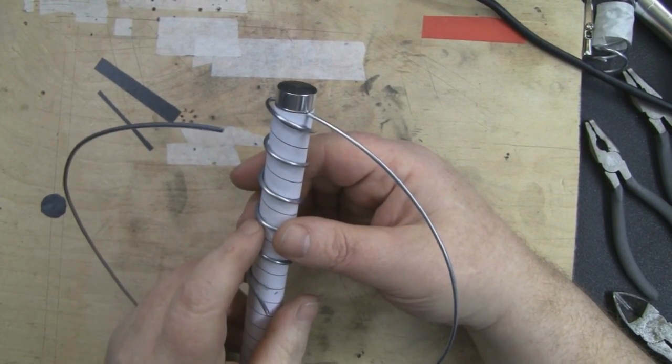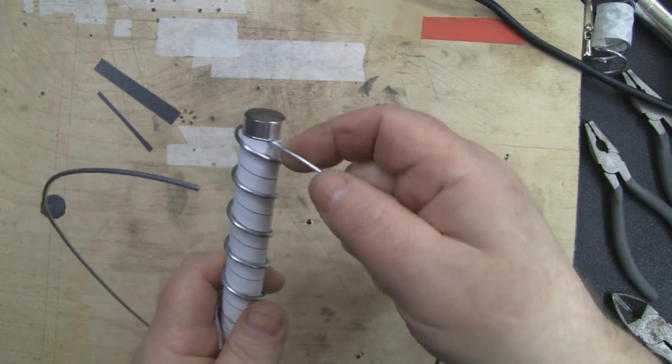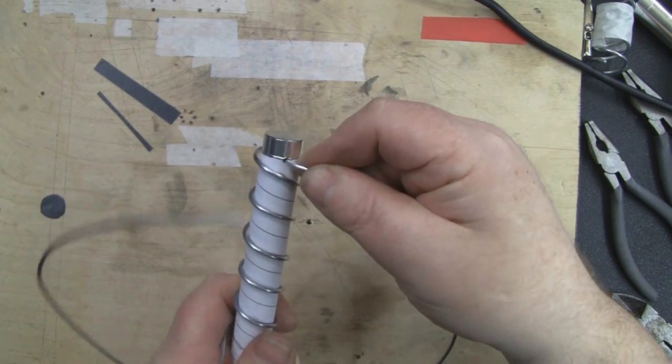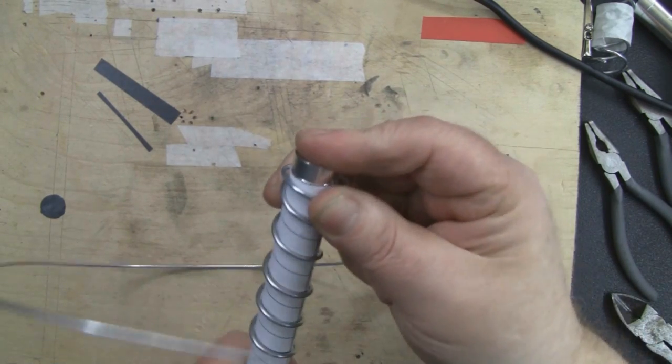Once you're happy that the first coils are lined up on the template, then it's time to put the second coil in. Exactly the same, start off with that little hole there and start winding the coil around.